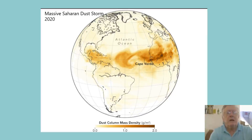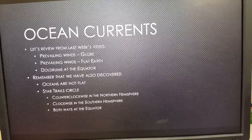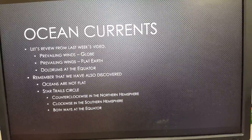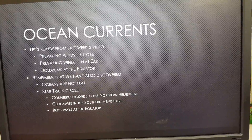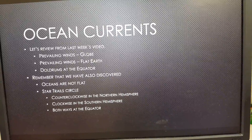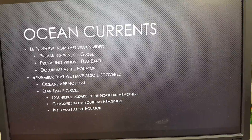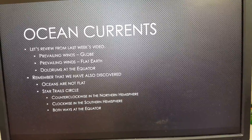So you can see a pattern here: prevailing winds, ocean currents, hurricanes, tornadoes, and that dust storm all follow this same Coriolis effect. That's what I wanted to show you. Then we have some more about ocean currents. Let's review a little from last week's video where we talked about the wind — first, prevailing winds on the globe, and second, prevailing winds on the flat earth.